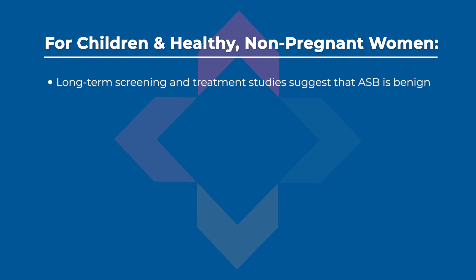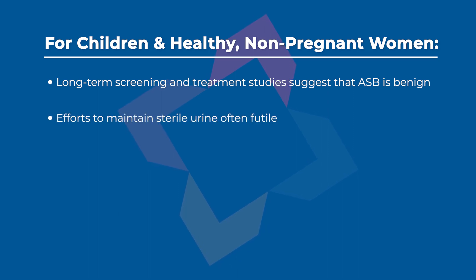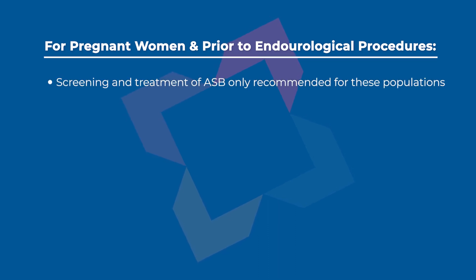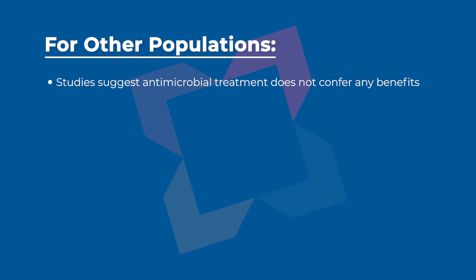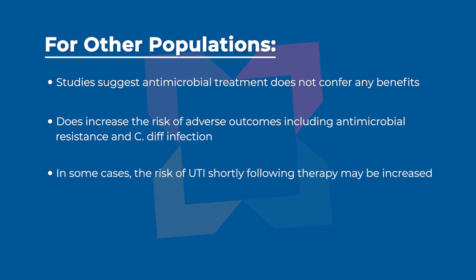Observational and intervention studies evaluating long-term screening and treatment in school children and healthy women suggest that ASB is benign in children and in women who are not pregnant. In addition, efforts to maintain sterile urine were often futile. Screening for and treatment of ASB is only recommended for pregnant women and prior to endourological procedures. Studies in other populations suggest that antimicrobial treatment does not confer any benefits, but does increase the risk of adverse outcomes, including antimicrobial resistance and C. diff infection. In some cases, the risk of UTI shortly following therapy may be increased.